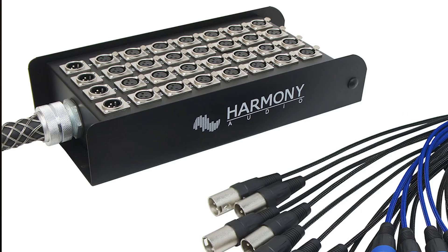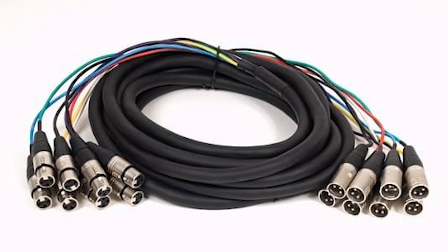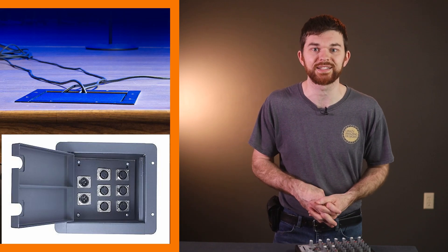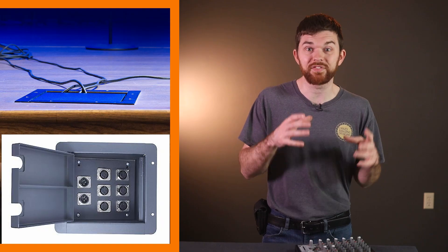For the snake that runs from front of house to the stage, it's usually going to have a box on the stage end. There are two other options: you could have a group of free hanging cables and connectors, or the wires from the snake could be soldered directly to wall and floor input jacks. It's most common to have the snake box run into a room or closet off stage where all of the stage inputs are connected to the snake box.